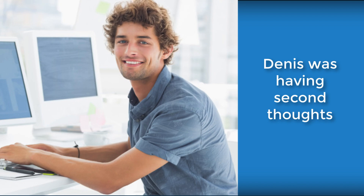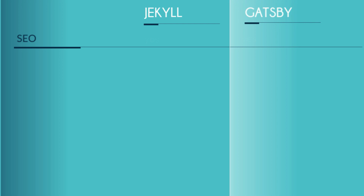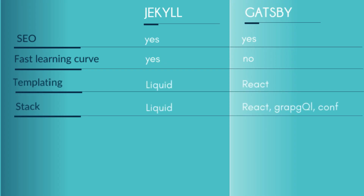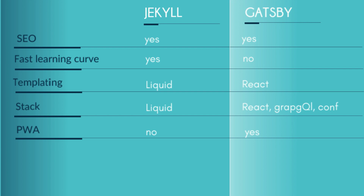Let me summarize what we have learned. Both Jekyll and Gatsby are great for SEO and they serve super fast static pages. Jekyll has a simple learning curve, while for Gatsby you need to know more. With Jekyll you only need to learn Liquid templating and have a basic knowledge of the terminal. Jekyll's templating system is Liquid, while Gatsby is a React app. With Gatsby you need to learn React, GraphQL, and all its configuration options. But your app will be a responsive webpage with all its advantages, not only a static site.